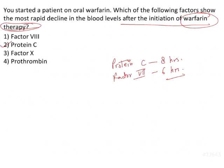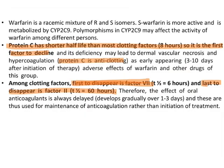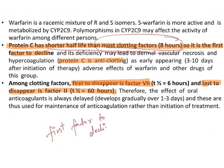Warfarin is a racemic mixture of R and S isomers; the S isomer is more active. Protein C has a shorter half-life than most clotting factors — a half-life of 8 hours — making it the first factor to decline. Protein C deficiency leads to dermal vascular necrosis and hypercoagulation, as Protein C is an anticlotting factor.